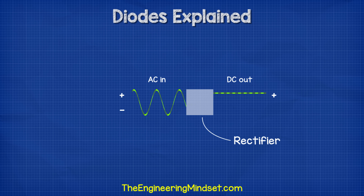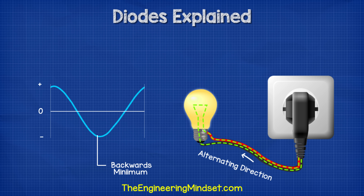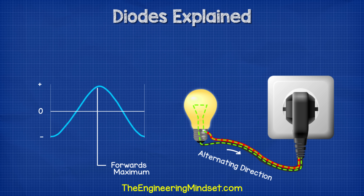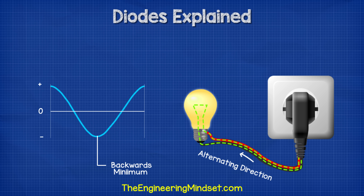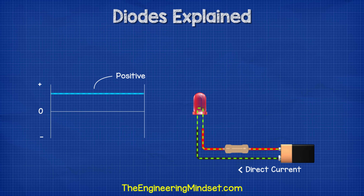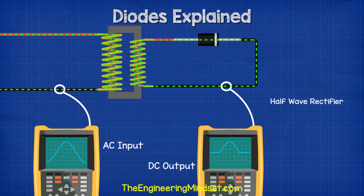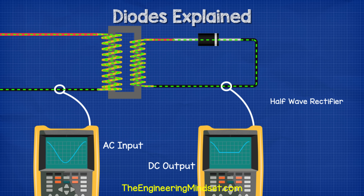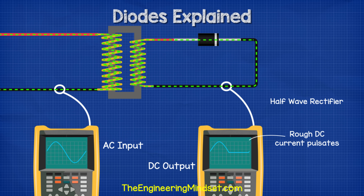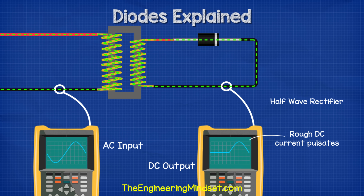We can also use diodes to convert alternating current into direct current. AC, or alternating current, moves electrons forwards and backwards creating a sine wave with a positive and a negative half. DC, or direct current, moves electrons in just one direction, giving a flat line in the positive region. If we connect the primary side of a transformer to an AC supply and then connect the secondary side to a single diode, the diode only allows half the wave to pass and blocks current in the opposite direction. The secondary side of the circuit therefore experiences only the positive half of the cycle — a very rough DC, although the current pulsates.